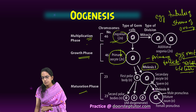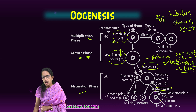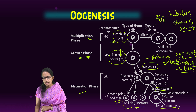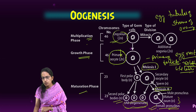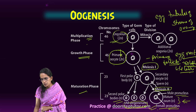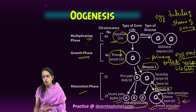The secondary oocyte proceeds through meiosis 2 and forms a female pronucleus and second polar bodies. The three polar bodies formed all degenerate, but the mature ovum remains.